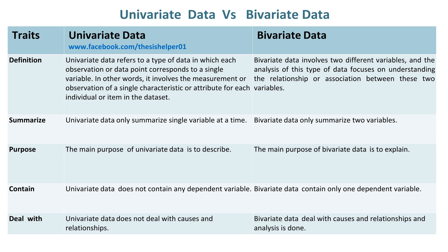In other words, it involves the measurement or observation of a single characteristic or attribute for each individual or item in the data set. Whereas, Bivariate Data involves two different variables, and the analysis of this type of data focuses on understanding the relationship or association between these two variables.